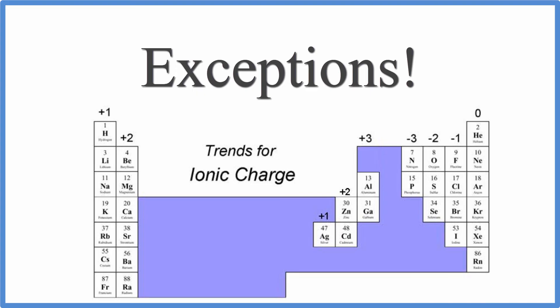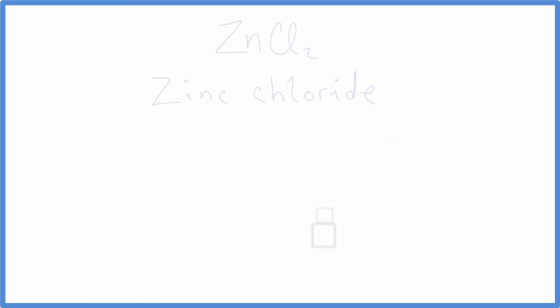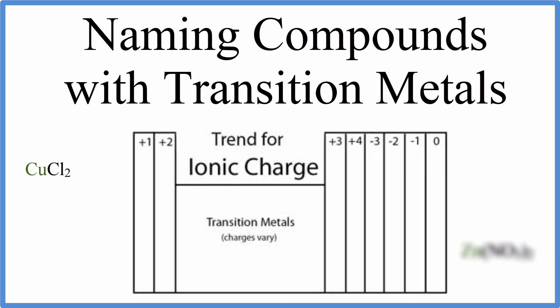As is always the case in chemistry, there are a few exceptions. For example, zinc is always plus 2, and silver is always plus 1. So if we have something like ZnCl2, we just write zinc chloride. Since zinc is always plus 2, we don't need the Roman numerals. Likewise, silver, if we had AgCl, we would just write silver chloride. We don't need to add Roman numerals.